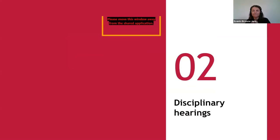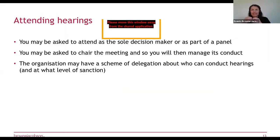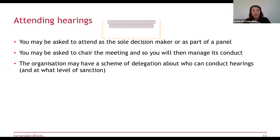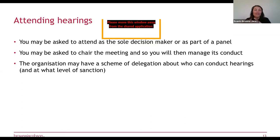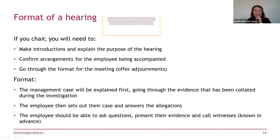Moving on to disciplinary hearings: you may be asked to attend as either the sole decision maker or as part of a wider panel — that will depend on your particular policy. Check your policy as to who hears cases. Your organisation should have a scheme of delegation about who can conduct hearings and at what level of sanction. For example, allegations of misconduct where there's potentially a dismissal at the end might need to go to a panel, so make sure you are the right person to be involved.